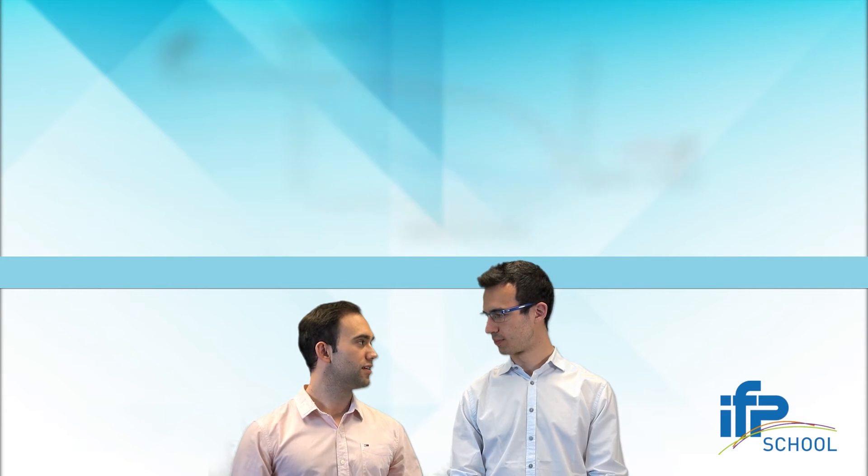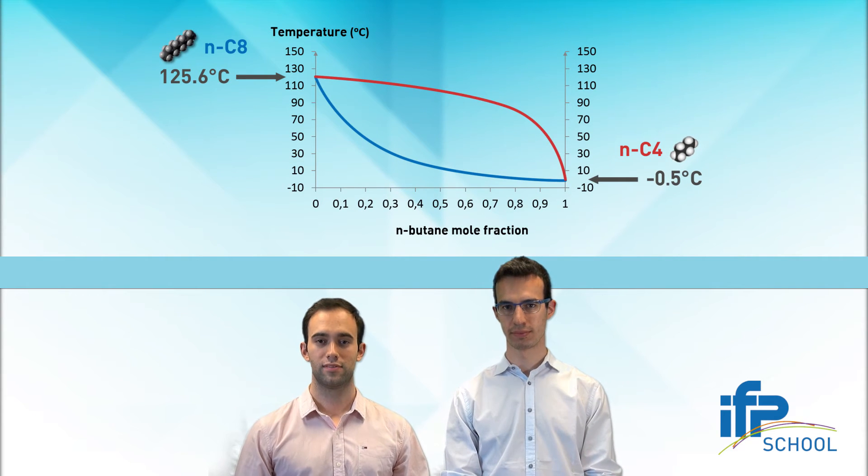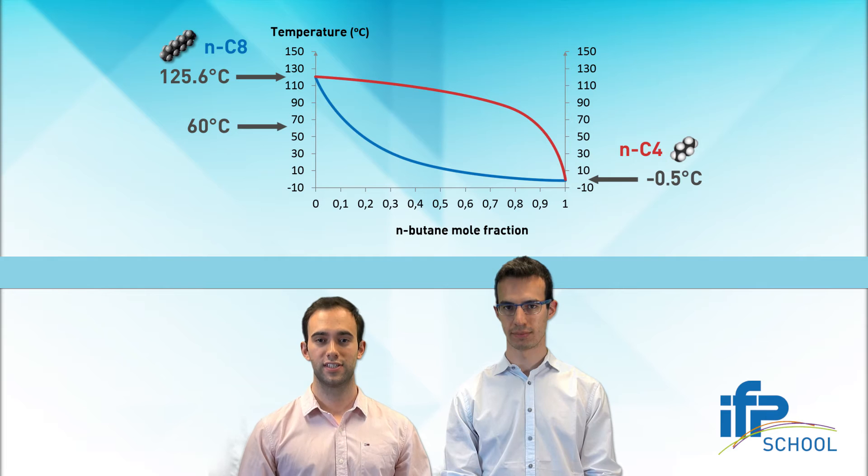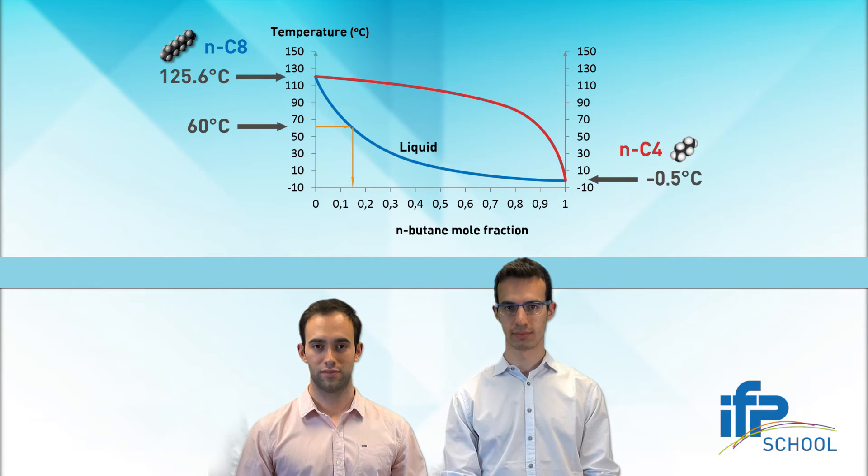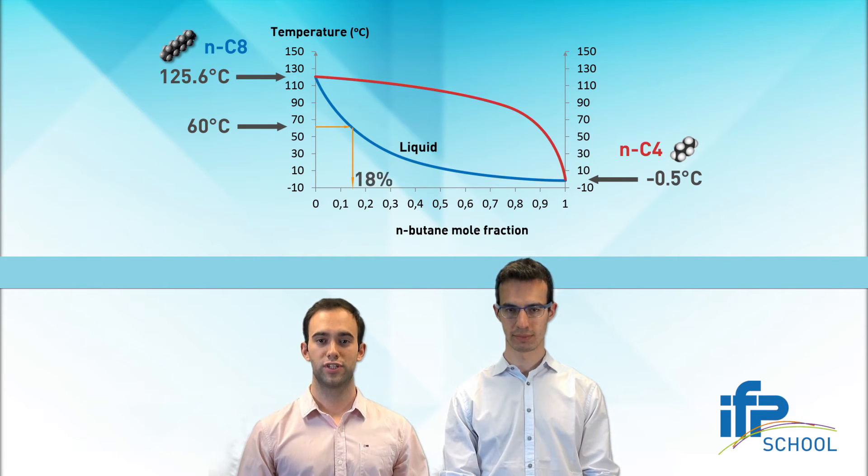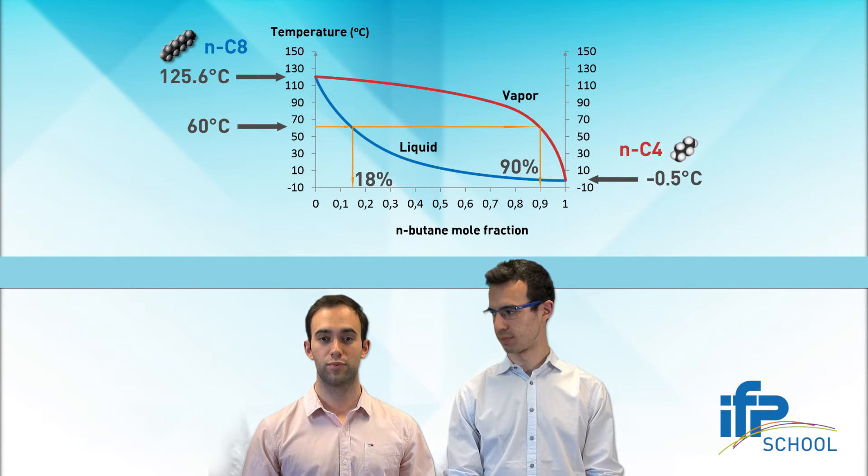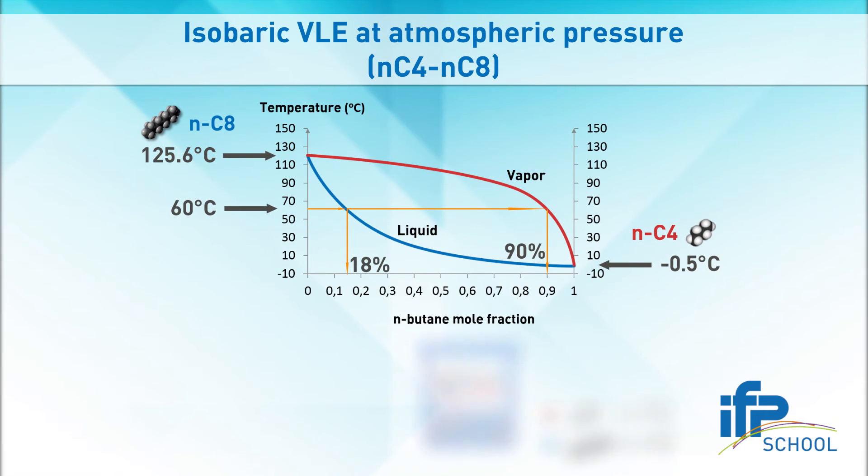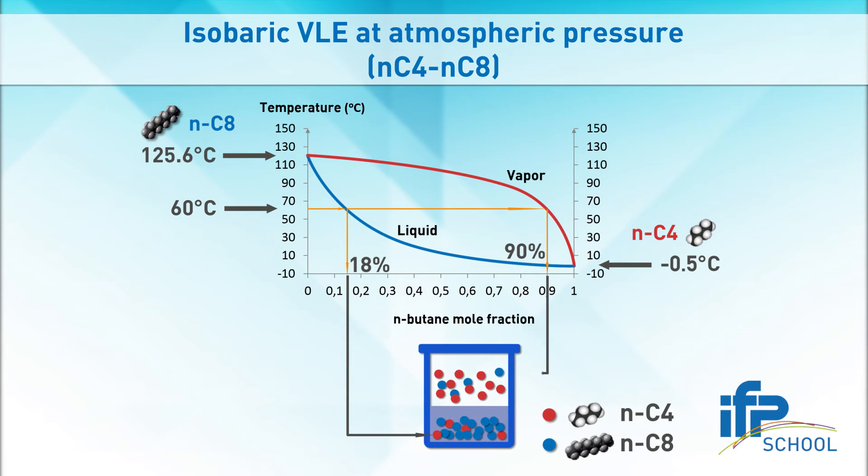Yes, octane remains in the liquid while butane goes into the vapor. Well, that's a common mistake. In fact, if we observe our diagram, let's say at 60 degrees Celsius, we can observe that the liquid composition is close to 18 percent of butane, whereas the vapor composition is about 90 percent of butane. In other words, we can see better this behavior on the diagram.